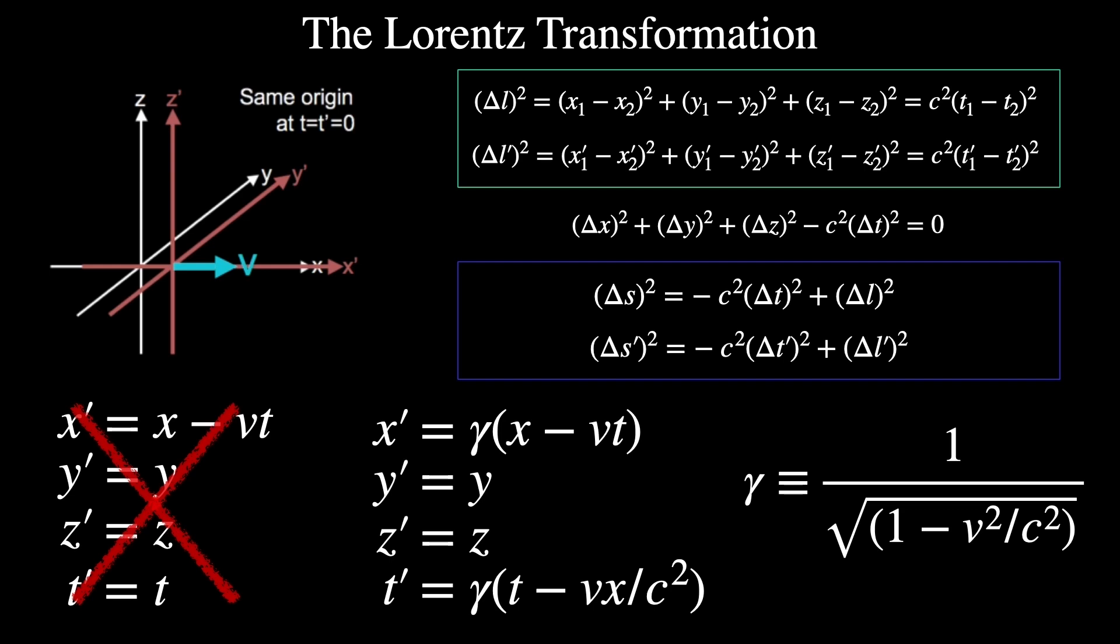That's what the diagram on the top left actually means. So, one frame, we'll call it the primed frame, is moving along the unprimed frame's x-axis at a constant speed v.